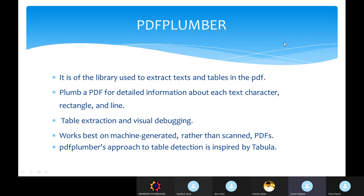PDF Plumber is one of the libraries in Python used to extract text and tables from PDF. PDF Plumber has many objects derived from PDFMiner: character, line, and rect. Character represents a single text character; line represents a one-dimensional line; rect represents two-dimensional work. It is based on a machine-generated rather than a scanned PDF. PDF Plumber is easy to use and open source — it gives more accuracy while extracting text and tables. PDF Plumber's table detection is inspired by the Tabula library.